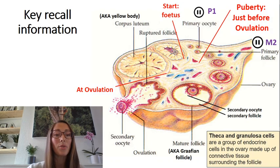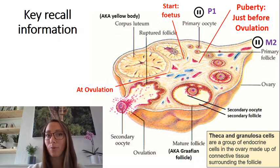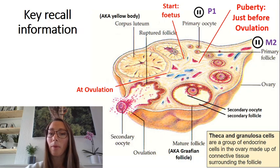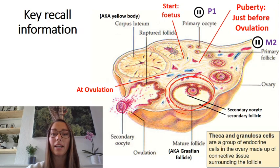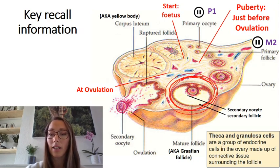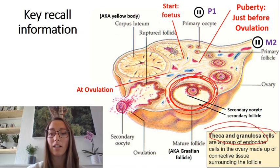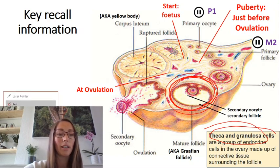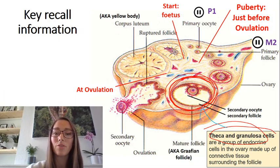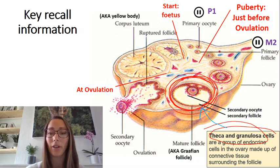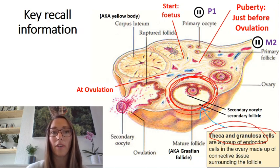Just a little bit of recall. We've looked at this already last week — when we were looking at oogenesis, we spoke about the development of follicles. Here we've got a Graafian follicle, which is a mature follicle. On the outside of that Graafian follicle, we've got a few cells: the thecal and also granulosa cells. These cells are really important because they release oestrogen into the bloodstream. So the thecal and granulosa cells are really important for the production of oestrogen.